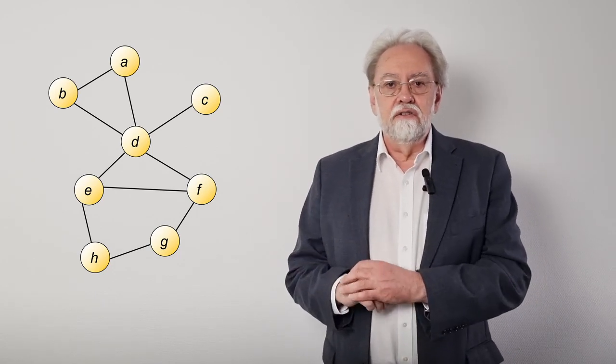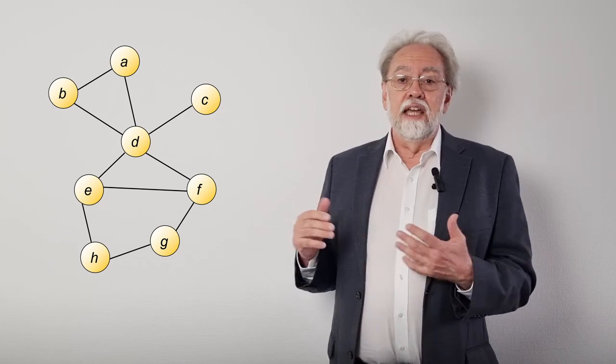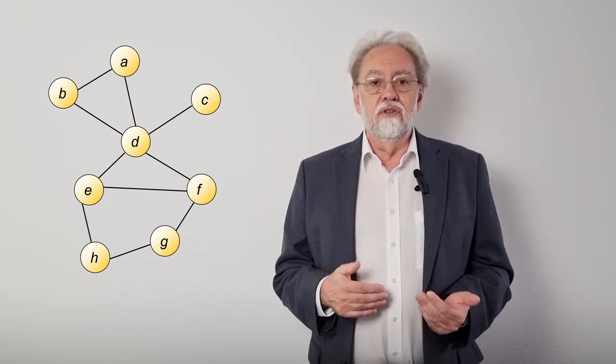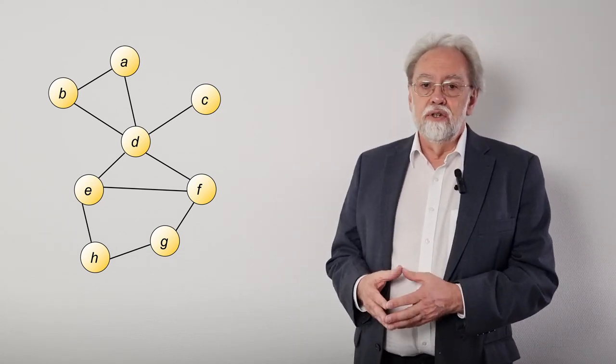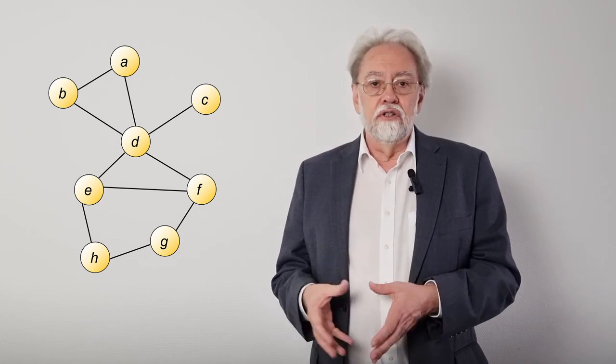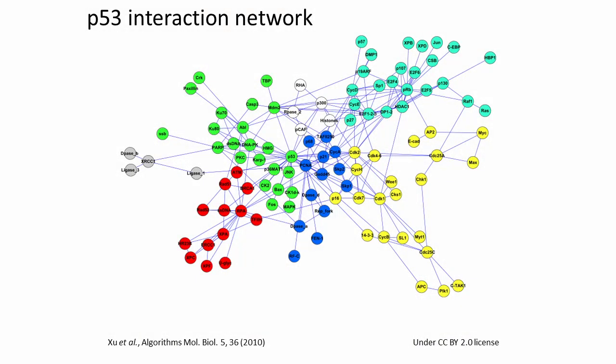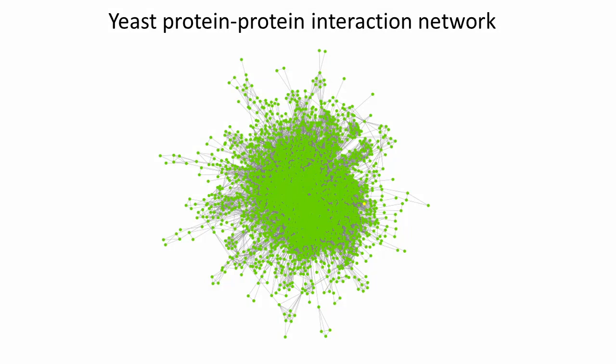To identify the individual nodes, we add labels. We call this an undirected graph because the edges don't have a direction. So a connection from one node to another, say from A to B, is the same as vice versa, from B to A. This type of graph is the right choice when you want to model a network of physical interactions between molecules, for instance proteins. One example for such a protein-protein interaction or PPI network is the interaction network of the tumor suppressor P53.